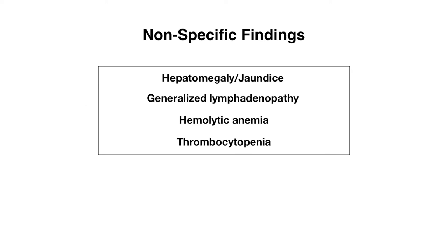Alright, before we get started, the TORCH infections can be confusing because they often have overlapping signs and symptoms. I wanted to highlight some nonspecific findings that are not going to help you parse out which infection is which. These nonspecific findings might appear in test questions, so look out for them — they include hepatomegaly and jaundice, generalized lymphadenopathy, hemolytic anemia, and thrombocytopenia.